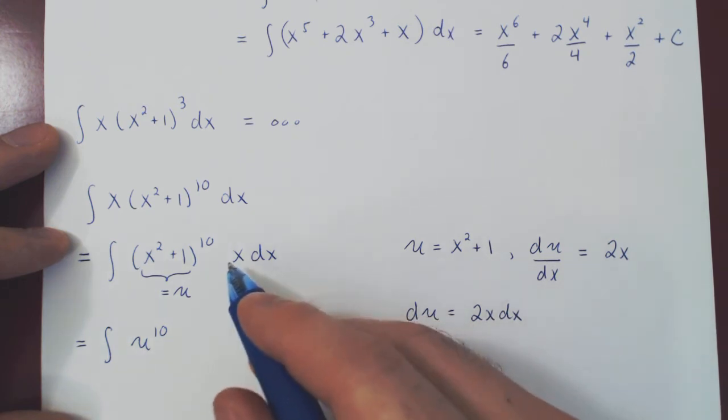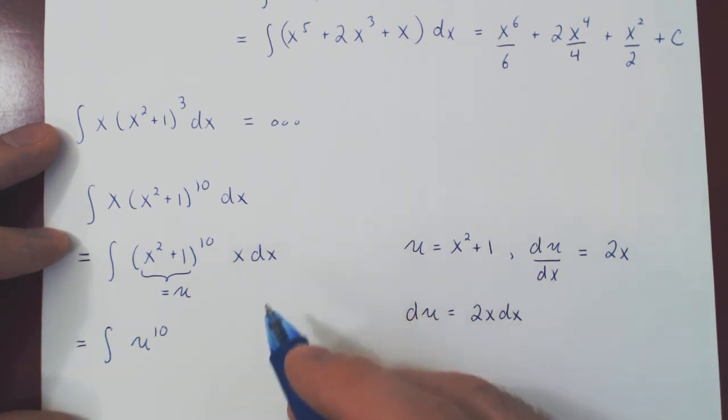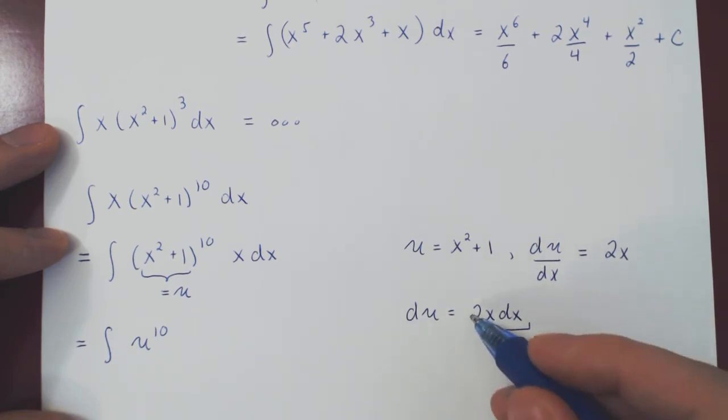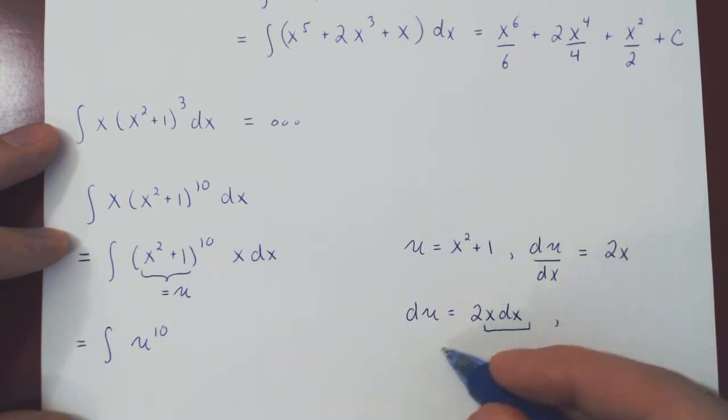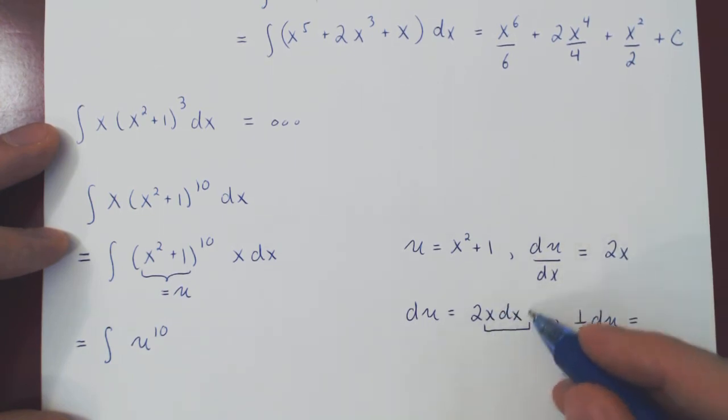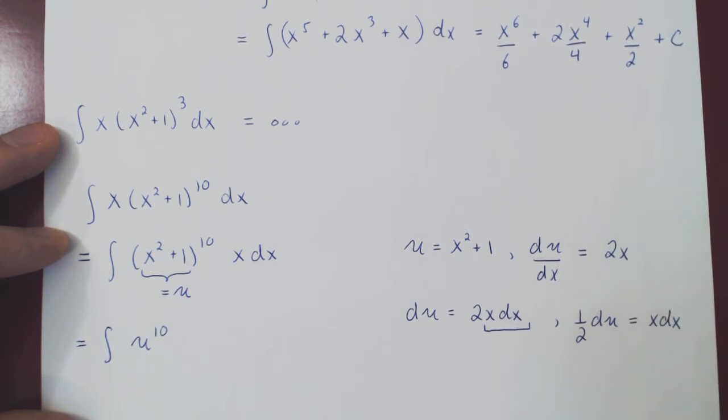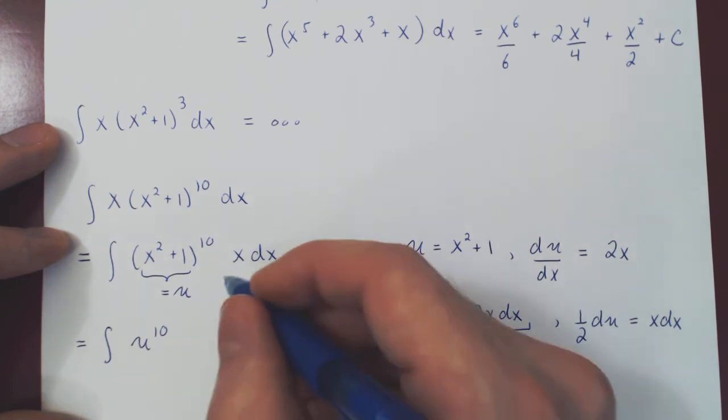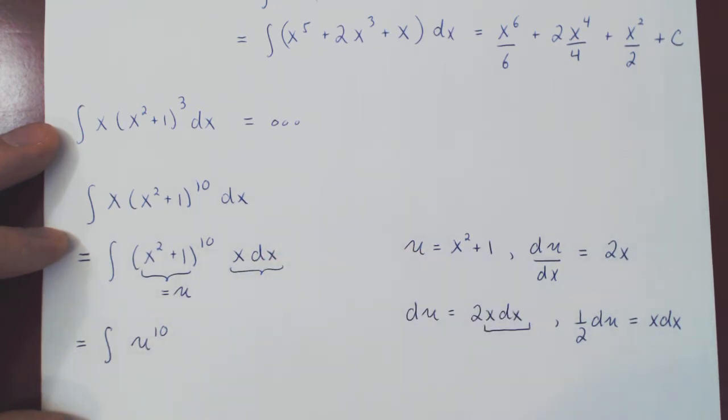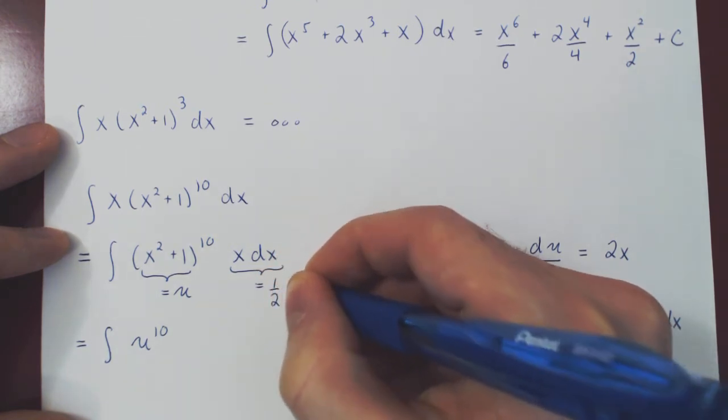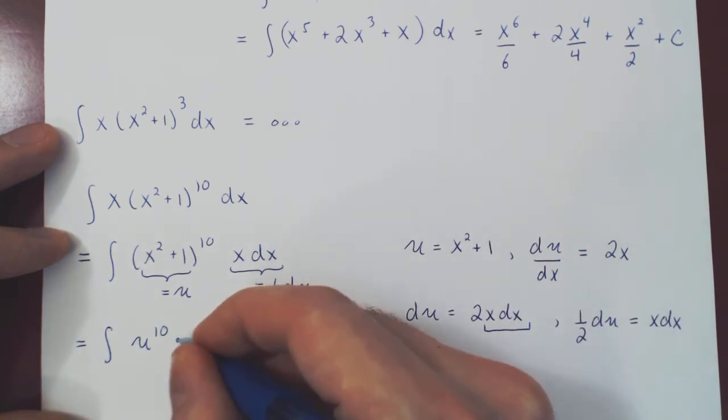Multiply by dx, and so you'll have du equals 2x times dx. But if you look, what we have here is not 2x dx, it's just x dx. So we want to isolate x dx as a function of u. We must divide by 2 on both sides. And then we get that 1 half du is equal to x dx. And that is our substitution. This is u to the 10, and the remaining x dx as a function of the new variable u is 1 half du.